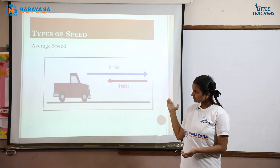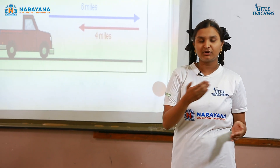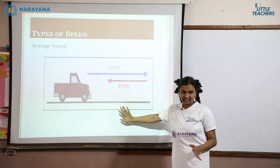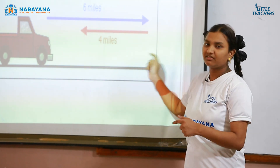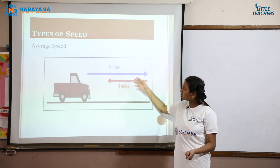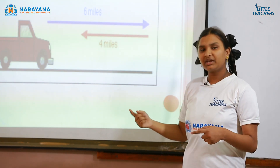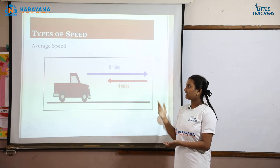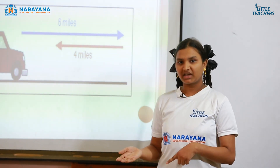Average speed is the total distance travelled by a body divided by the total time taken. For example, a body travels 6 meters in one direction and returns 4 meters. The total distance travelled is 6 plus 4, which is 10 meters. If 10 seconds are taken for 6 meters and 10 seconds for 4 meters, we can calculate the average speed as total distance divided by total time taken.